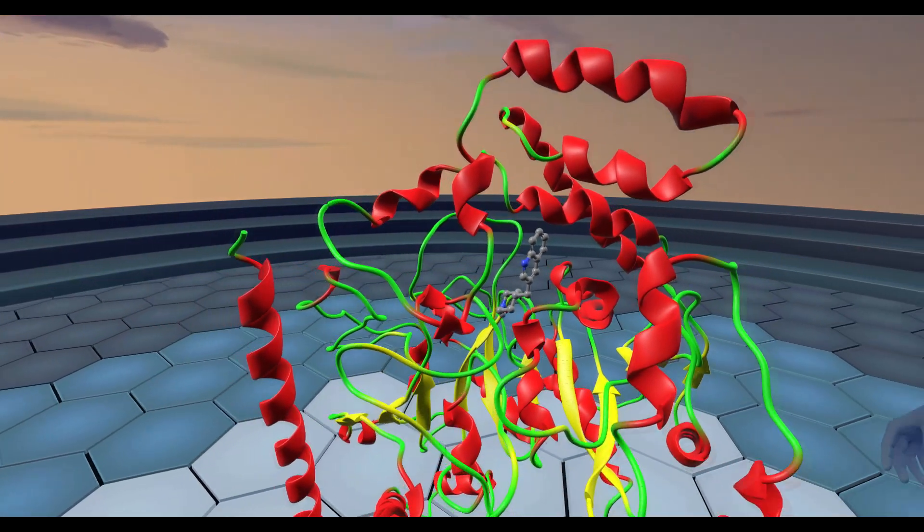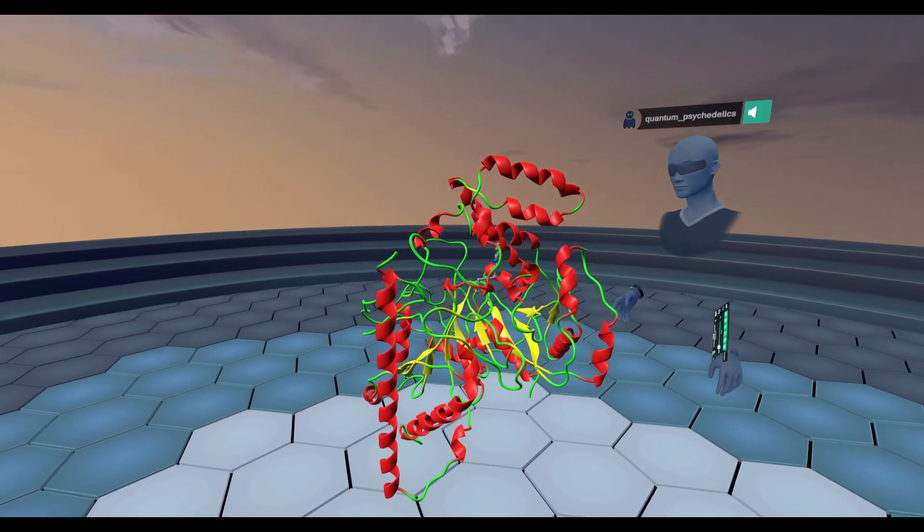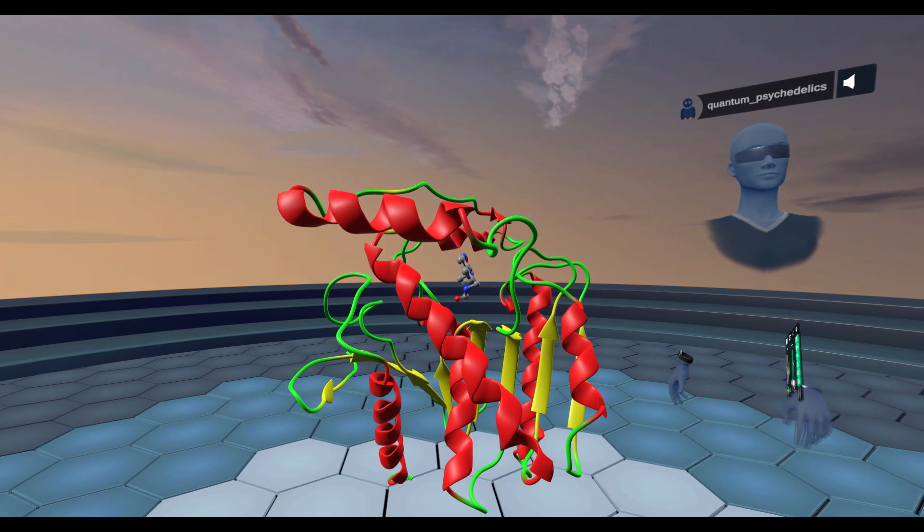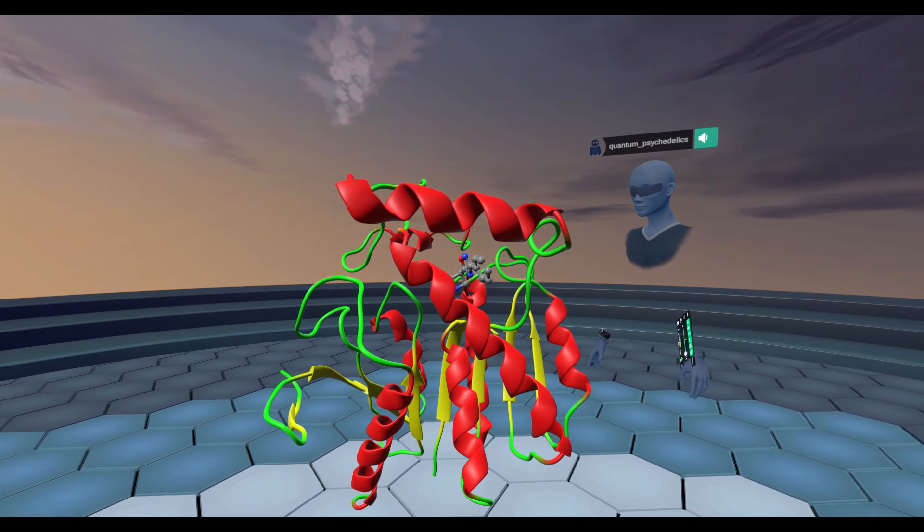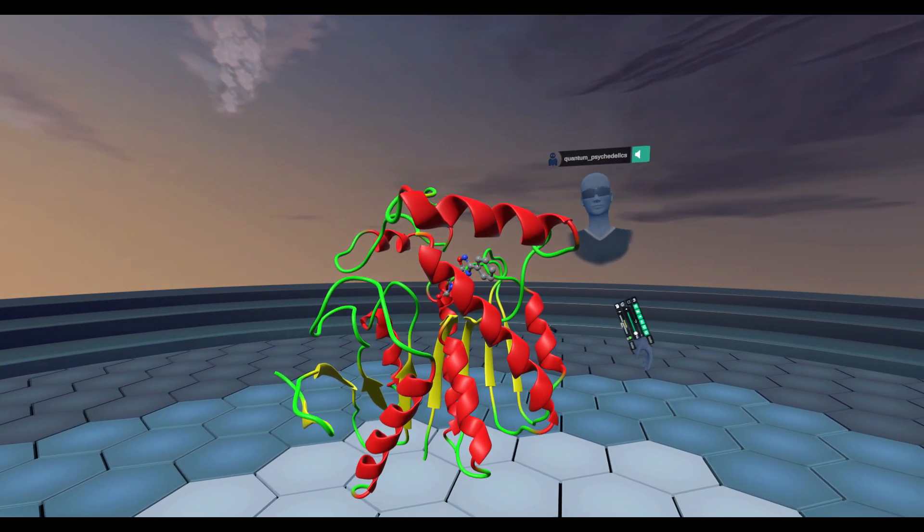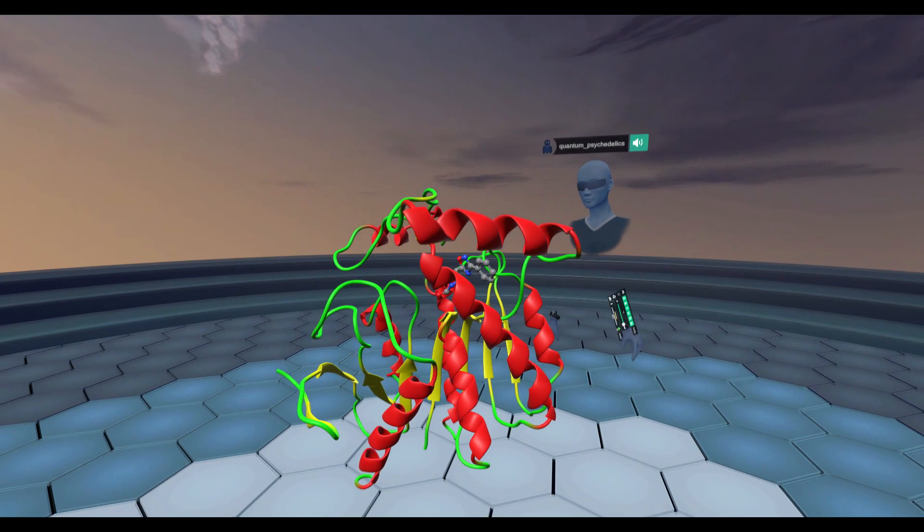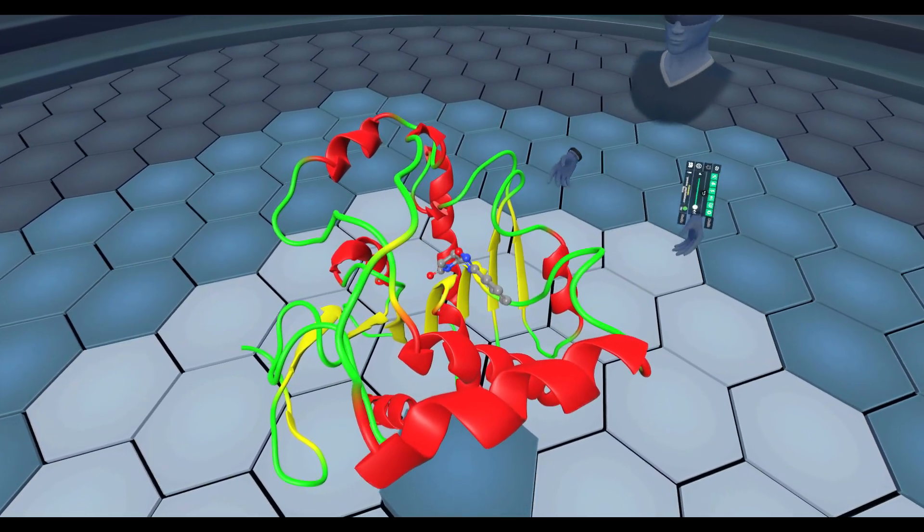Let's look at the other enzyme that breaks down endocannabinoids. This one is called MAGL, or monoacylglycerol lipase, and it selectively breaks down 2-arachidonylglycerol.